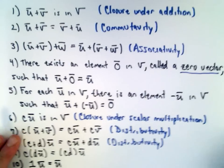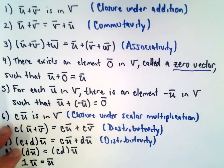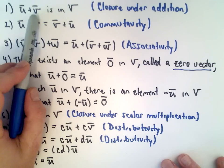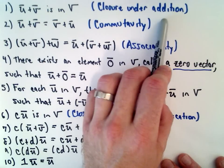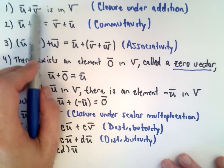So let's run through the axioms real quick. If we take little u and add little v, that's going to be in our big set V. So this is closure under addition. Vector U plus vector V is in V.